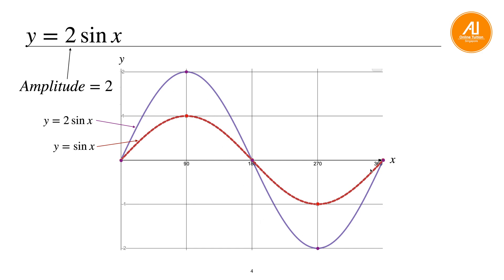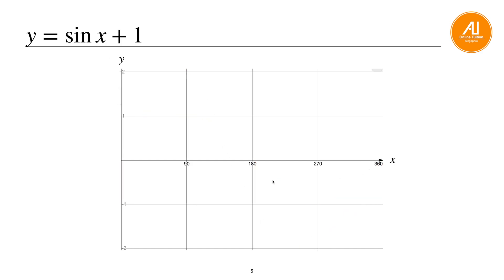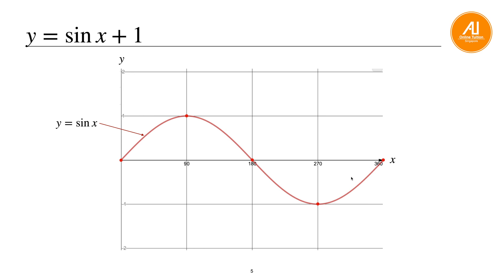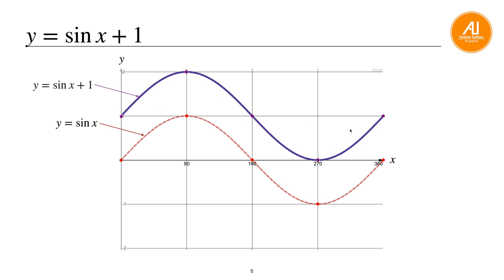For y equals to sine x plus 1, draw the usual sine curve first, then shift every point upwards by one unit. So zero becomes one, one becomes two, and the valley value shifts from minus one to zero. The shape looks exactly the same — it's just the entire graph moved up one unit.